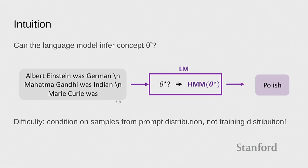This corresponds to the fact that in general, documents have topical coherence — you have a Wikipedia page about Albert Einstein. But in these in-context examples, you're sort of quickly changing the topic while still using the HMM — kind of resetting the topic. So then the question is: what will the language model do on this prompting distribution? What you'd hope is that the language model could still infer the target concept and then generate from this HMM. But the difficulty is the distribution mismatch — you're conditioning the language model on samples from the prompt distribution, which is different from the training distribution.